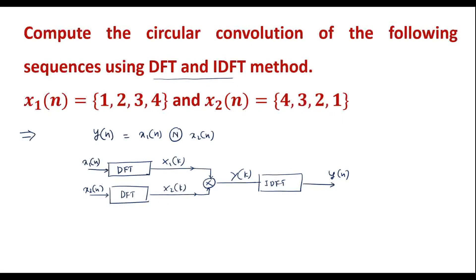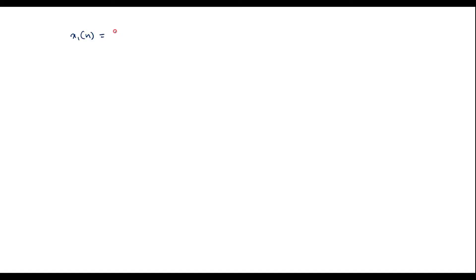Now I will calculate X1(k) using the matrix method. The given sequence x1(n) is [1, 2, 3, 4]. I will find the DFT of this using the matrix method. In the matrix method, first we have to write the DFT matrix, also called the twiddle factor matrix.